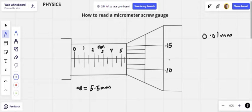You have to really take note of that. While on this main scale side, each calibration is 0.5 millimeters, on this one, each calibration is 0.01 millimeters.